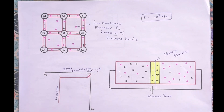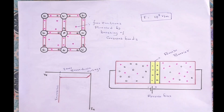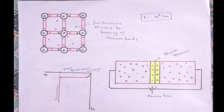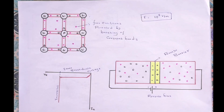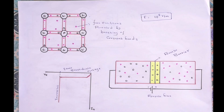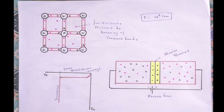As a result, a large number of minority charge carriers are generated, and due to this a large current flows through the diode — the current increases. We can also say that due to the breaking of covalent bonds in the depletion region, the reverse barrier is broken down. This type of breakdown is called Zener breakdown, and the point of voltage where this breakdown occurs is called the Zener breakdown voltage.